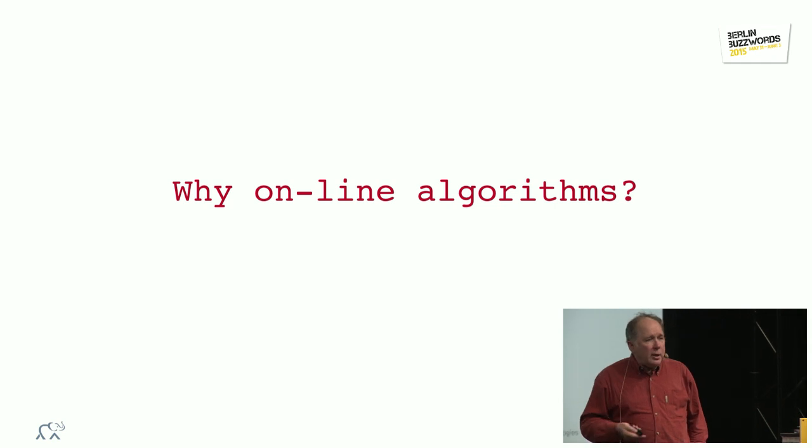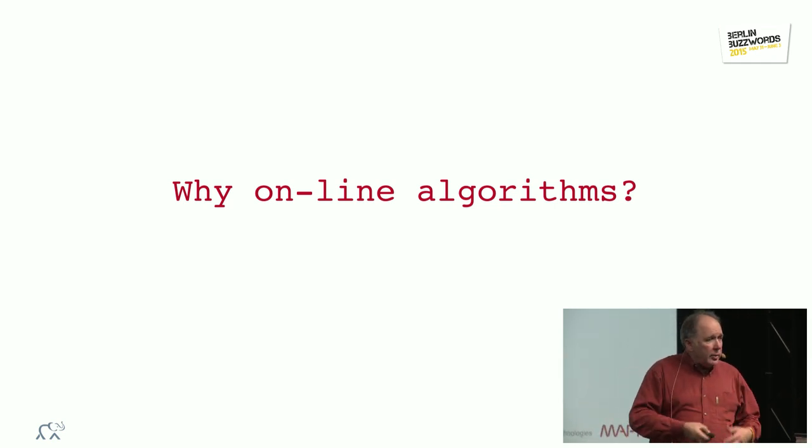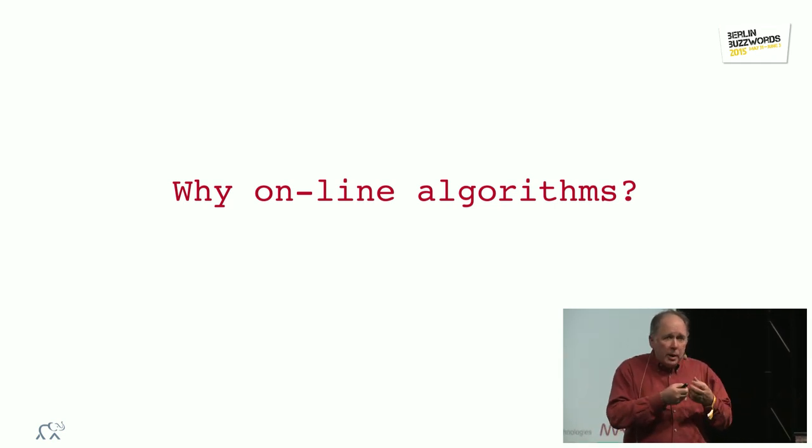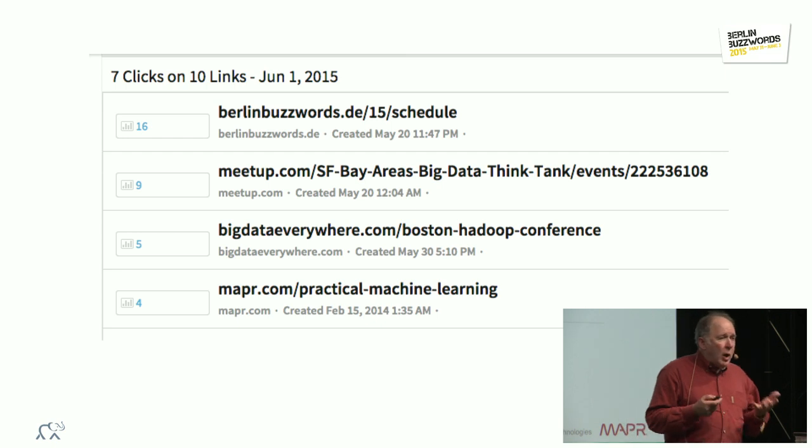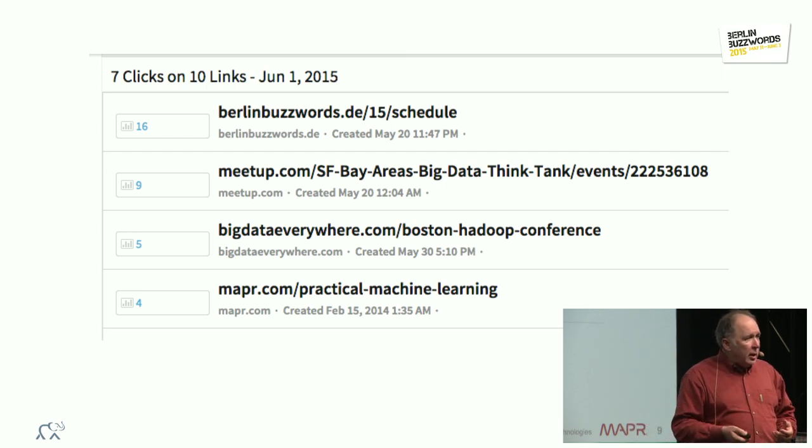So the first question is why do we need online algorithms? An online algorithm is one that always gives you the answer right now. It takes data, it has a finite amount of memory, and you can get the answer from it at any given time. Well, here's an example of why you need online algorithms.